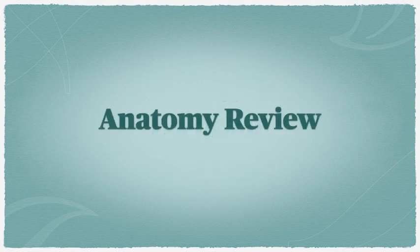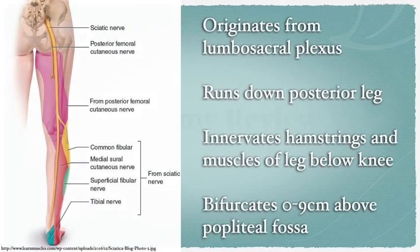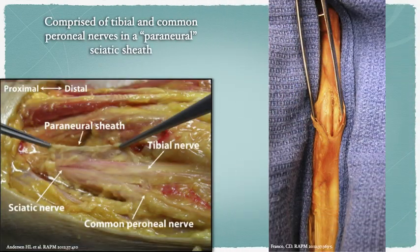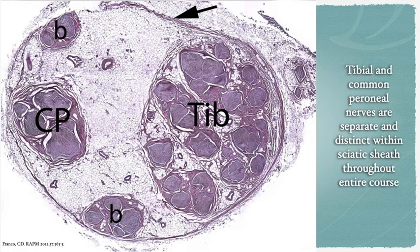Let's begin with a quick review of the anatomy. The sciatic nerve originates from the lumbosacral plexus and runs down the posterior portion of the leg. It innervates the hamstrings and muscles of the leg below the knee. It bifurcates zero to nine centimeters above the popliteal fossa. The sciatic nerve is comprised of tibial and common peroneal nerves within a perineural sciatic sheath.